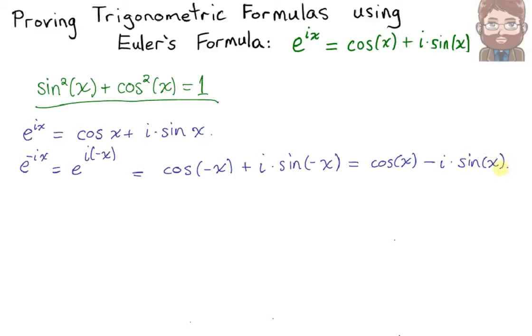Next, we're going to multiply together these two equations. We'll have e to the ix times e to the negative ix. That will be equal to cosine of x plus i times sine of x times the quantity cosine of x minus i times sine of x.